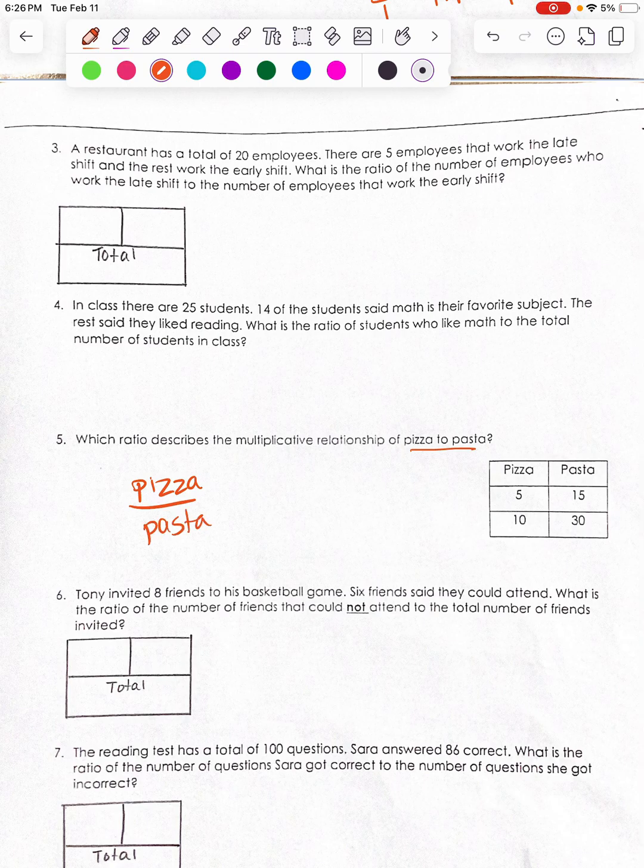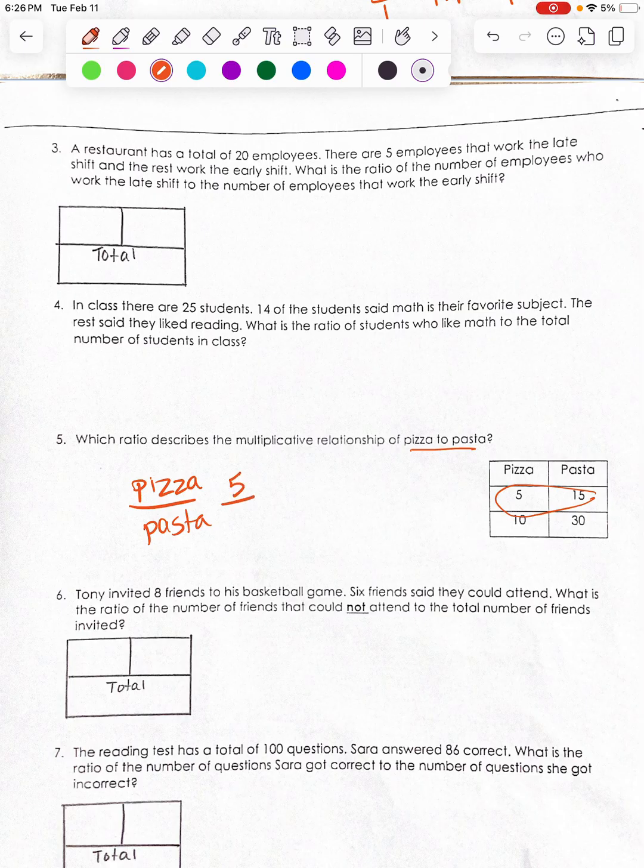All I'm going to do is I'm going to take pizza and pasta and look right here. Pizza is 5 and pasta is 15. I could have used the 10 and 30 also.